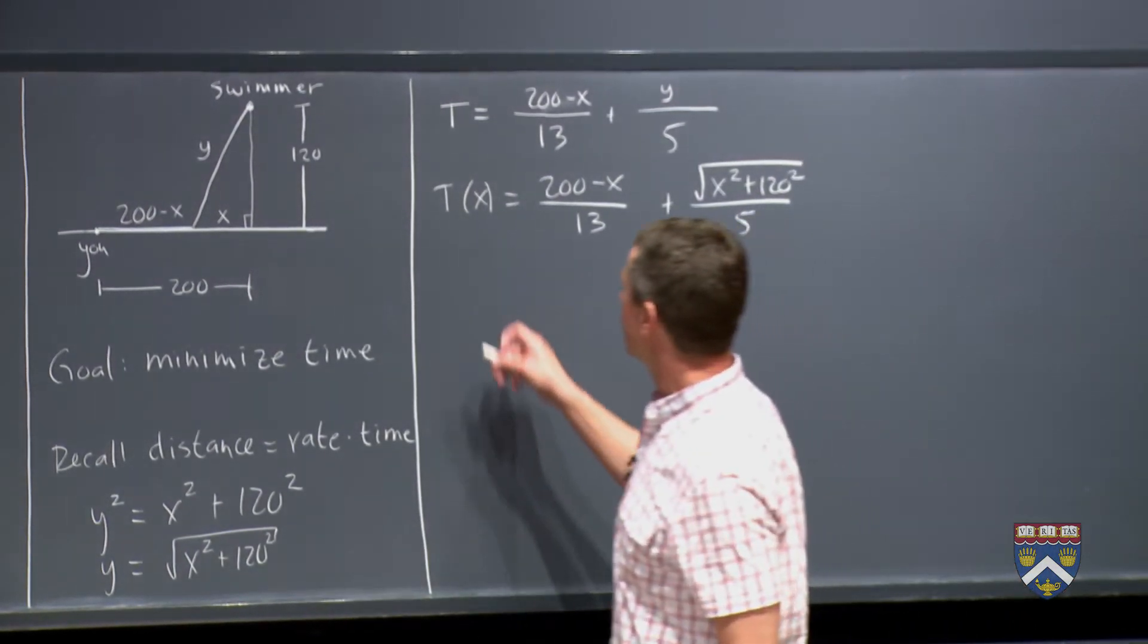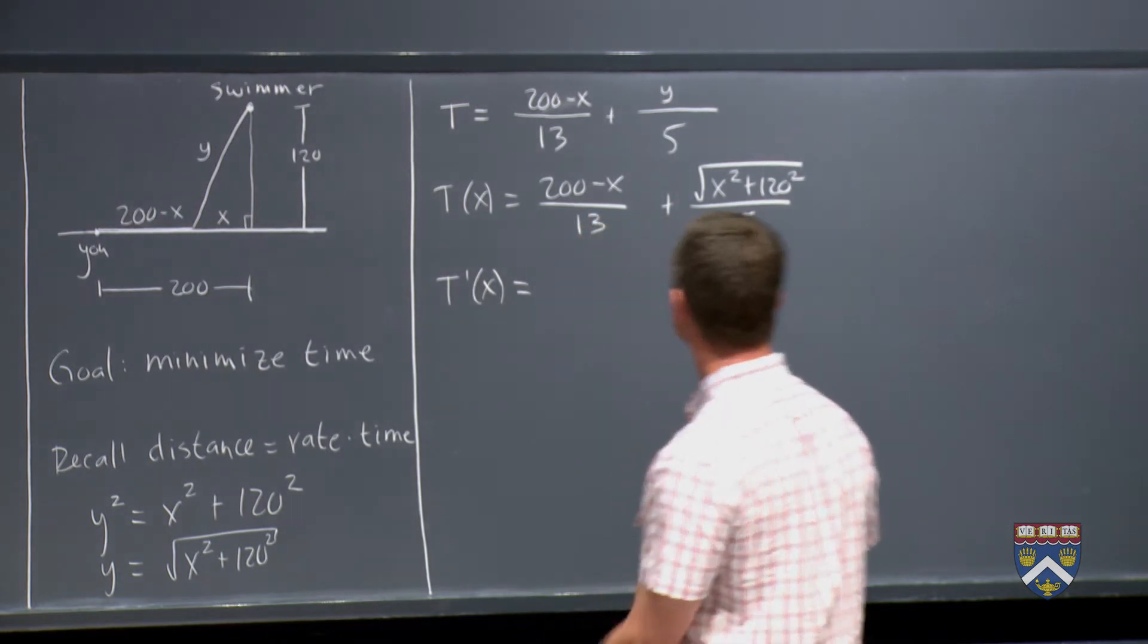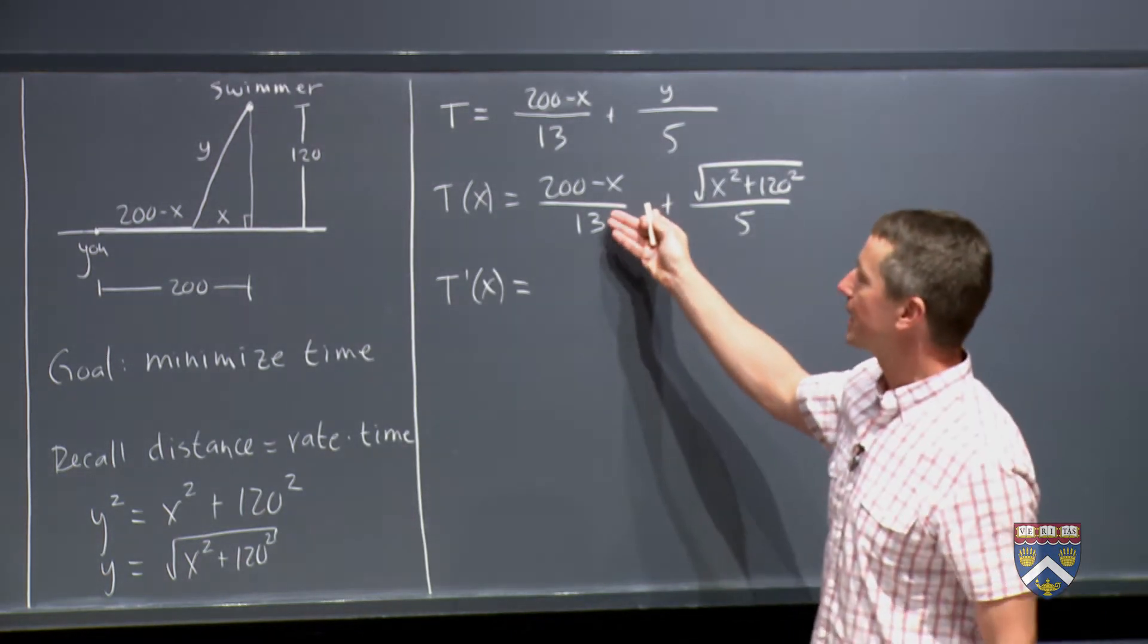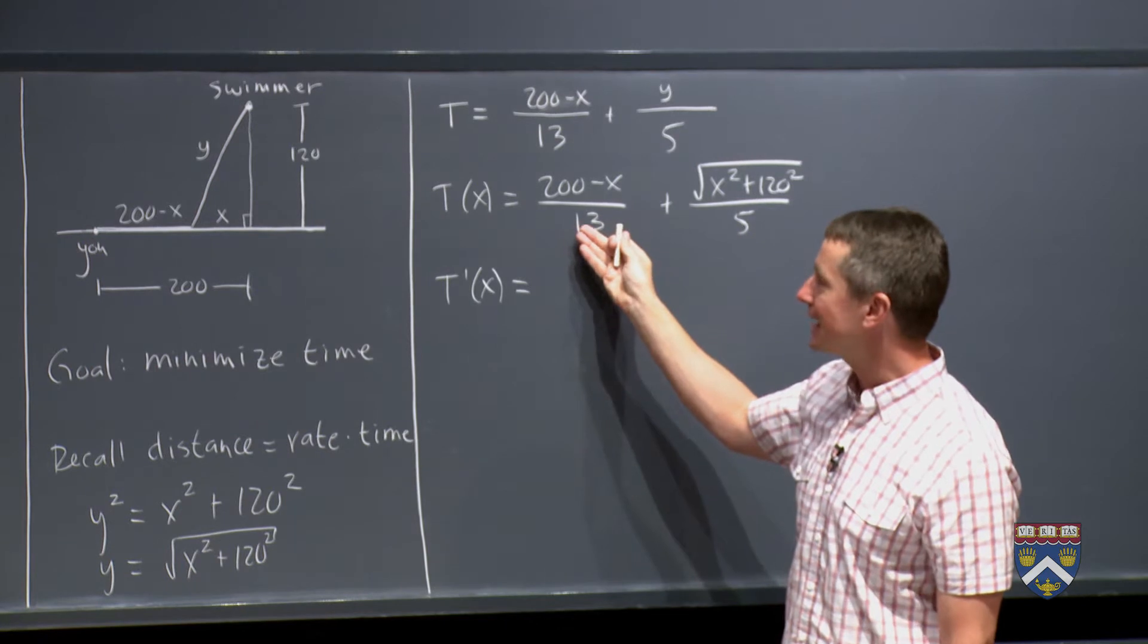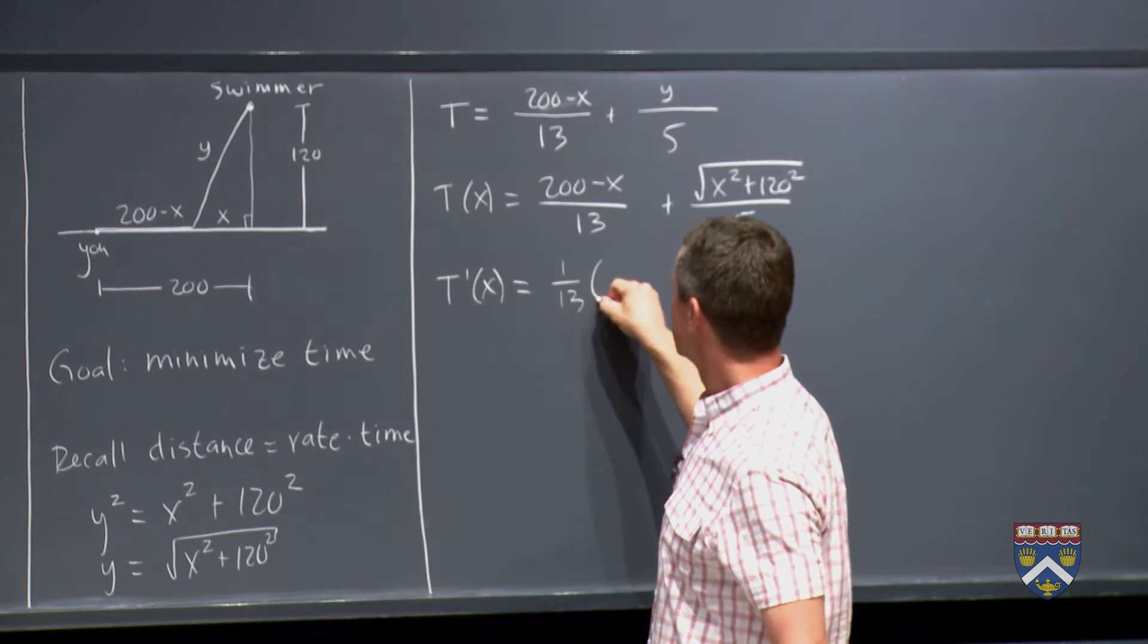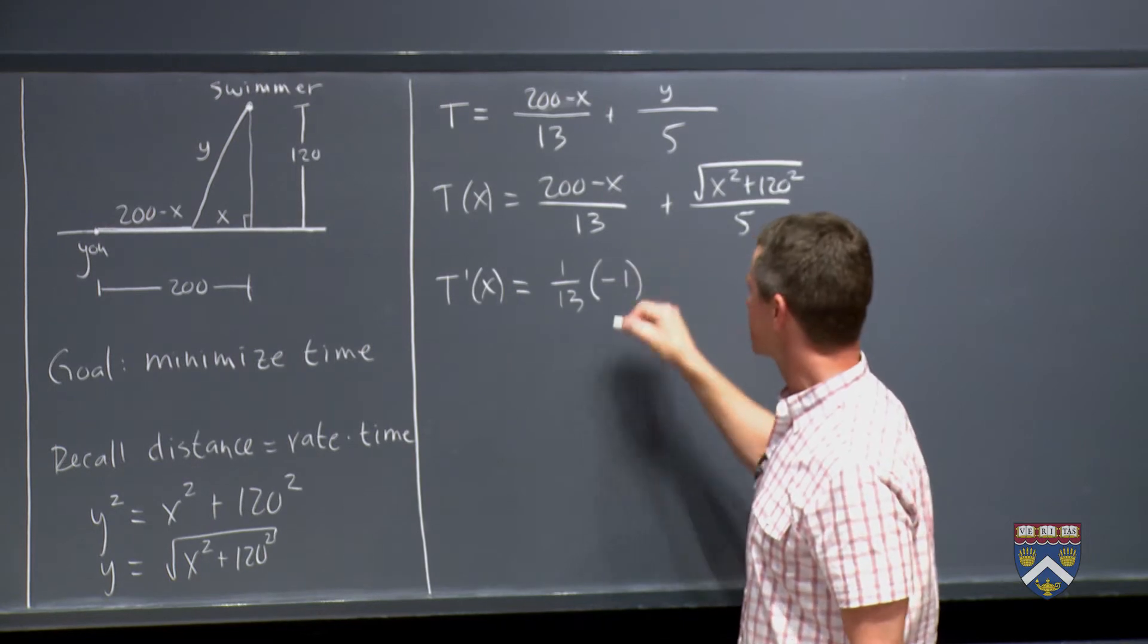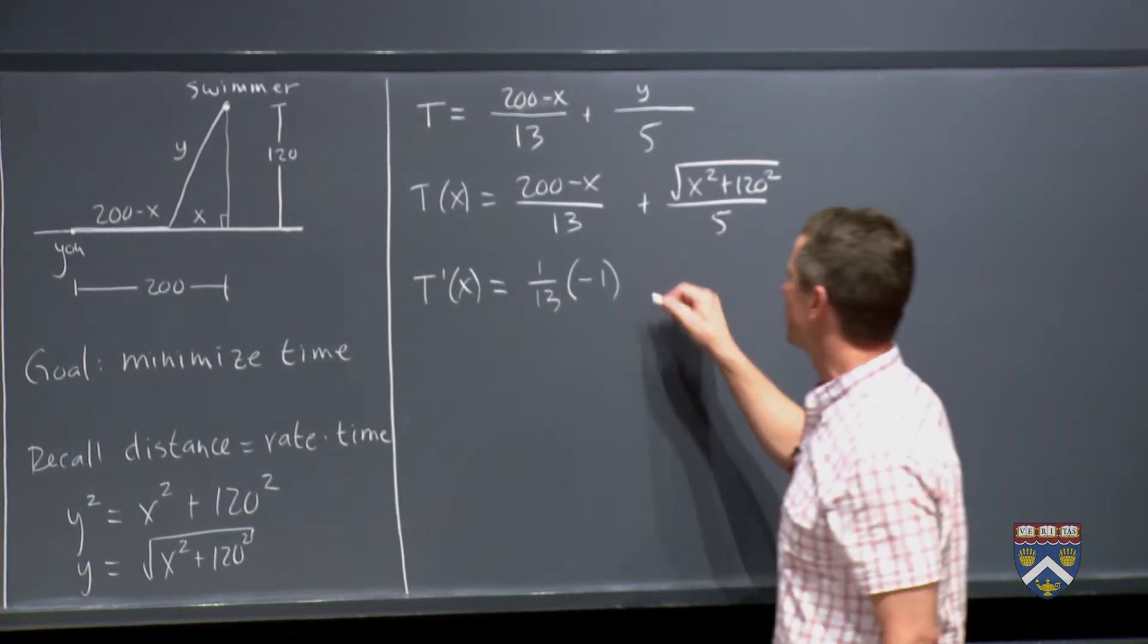Now we've got our function entirely as a formula of one variable, so we can take the derivative. Do we need the quotient rule for these? We could, but it's unnecessary because these are constants on the bottom. You can think about this as 1/13 times 200 minus x, in which case the derivative will be 1/13 times the derivative of 200 minus x. Derivative of 200 is 0. Derivative of minus x is minus 1.